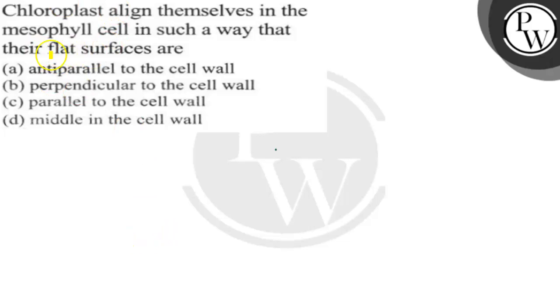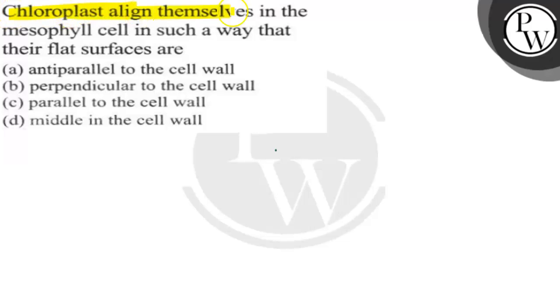Hello, let's read the question. Here we have an MCQ type question in which it is asked: chloroplast align themselves in the mesophyll cell in such a way that their flat surfaces are... So what we have to do here is find out the alignment of chloroplast in the mesophyll cells.